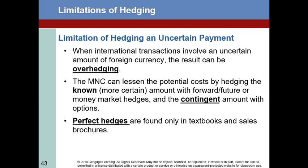The notion here is that international transactions involving an uncertain amount of foreign currency will often result in a company over-hedging — that is, committing to purchasing more rather than less. It's like overbuying insurance in some sense, and that can leave you with an excess of the foreign currency. You can under-hedge as well, but the issue brought forth in the textbook is that of over-hedging.